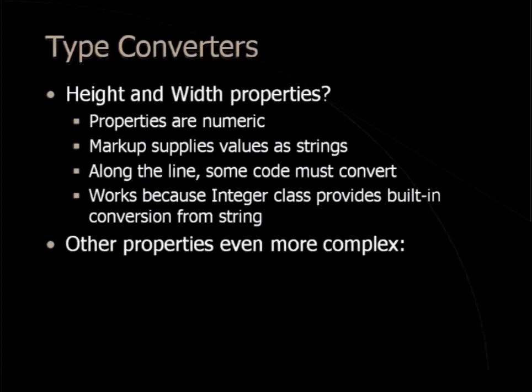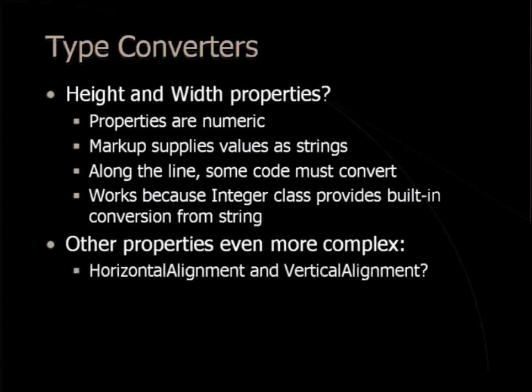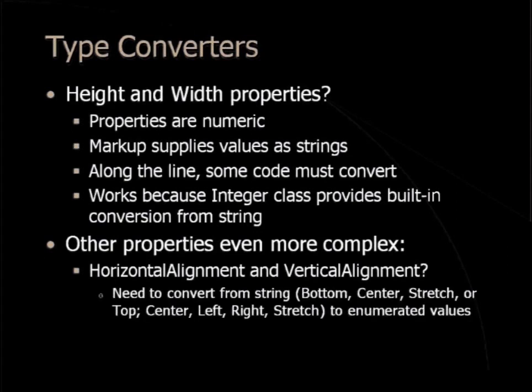Other properties are even more complex — for example, the horizontal alignment and vertical alignment properties. These are enumerated values: bottom, center, stretch, or top, center, left, right, or stretch — mapped to some enumerated number, a numeral value, because enumerations are stored internally as some sort of number. So we need to convert from a string — the letters B-O-T-T-O-M — to a number which corresponds to that enumerated value. Someone, somewhere, is doing that for you.